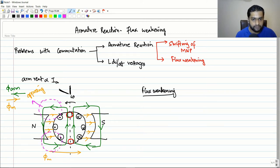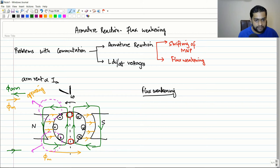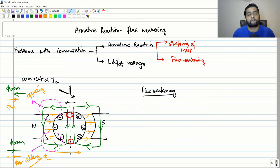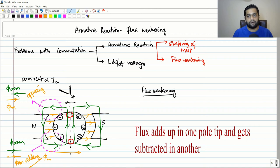Now let us take the other tip of the same pole and magnify it. Here the armature flux is in this direction, and the main field flux is also in the same direction — therefore at this pole tip the fluxes are additive in nature. So in one pole tip the flux is adding and in the other pole tip the flux is subtracting, and both addition and subtraction are functions of the armature current.